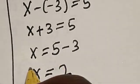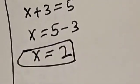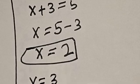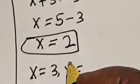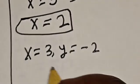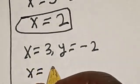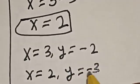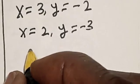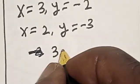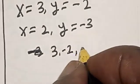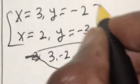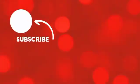Therefore, the values of x and y are: x is equal to 3 and y is equal to minus 2, or x is equal to 2 and y is equal to minus 3. So our answer is (3, minus 2) and (2, minus 3). Don't forget to like, share, comment and subscribe. Thank you.